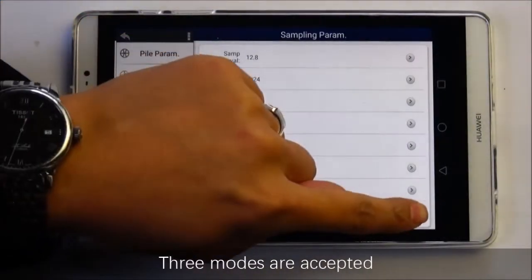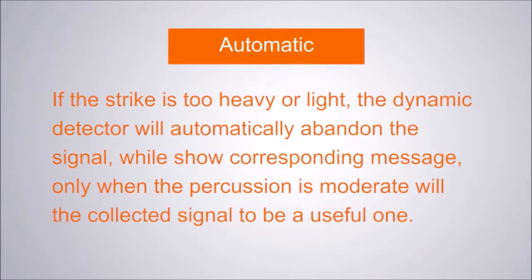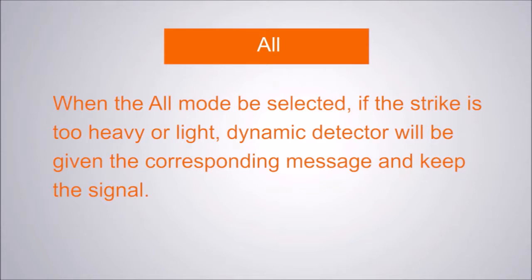Acceptance mode: Three modes are available - automatic, manual, and all. In automatic mode, if the strike is too heavy or light, the dynamic detector will show a corresponding message. Only when the percussion is moderate will the collected signal be useful. In manual mode, if the strike is too heavy or light, the detector will give an appropriate message and ask whether to retain the signal or not. When all mode is selected, if the strike is too heavy or light, the detector will give the corresponding message and keep the signal.